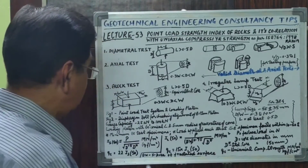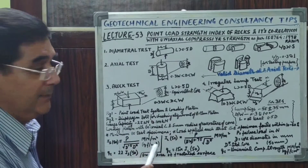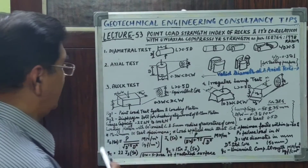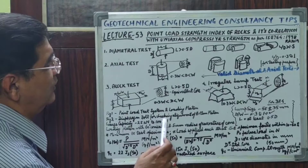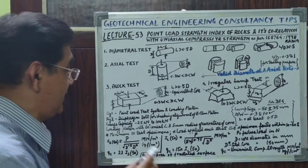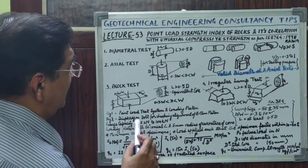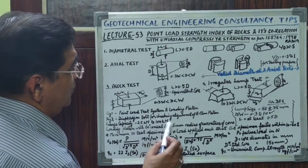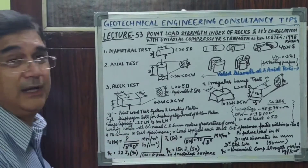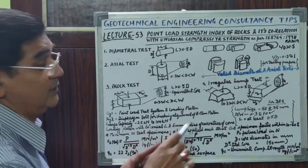In this code, Figure 1 shows the point load test system and loading pattern, and Figure 2 shows the diaphragm bolt for checking alignment of the bottom platen. The code specifies that the gauge capacity for testing core samples should be between 25 kN and 100 kN maximum. The loading platens must have a 60-degree conical angle and a 5 mm radius of curvature of cone truncation.